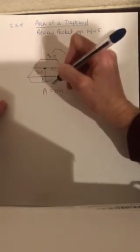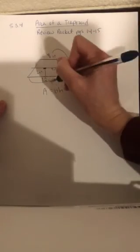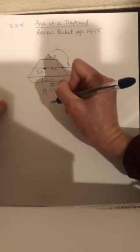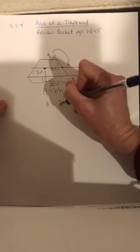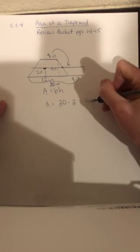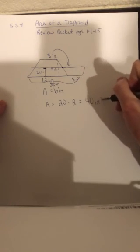12 inches plus eight inches is 20 inches. So the new base is 20 times the new height, which is two. That is going to equal 40 inches squared. And that is it.